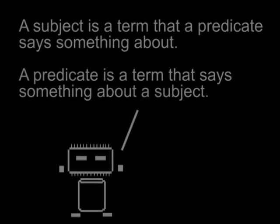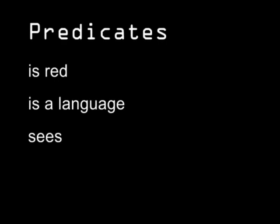Let's look at those predicates. If a predicate says something about a subject, it makes sense that a predicate does not include the subject. Some examples of predicates are: is read, is a language, or sees. Let's simplify these predicates by using constant symbols. Unlike variables x, y, and z, and individual constants like h and e, the symbols for predicates are capital letters. Using capital letters for predicate constants is a convention in logic, so the predicates end up looking like this.